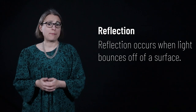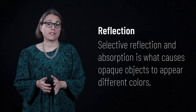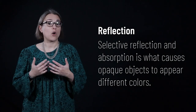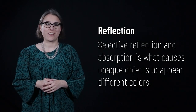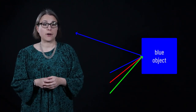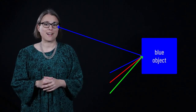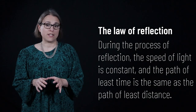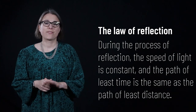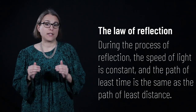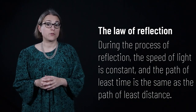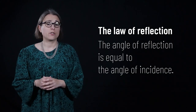Reflection is what happens when light bounces off of a surface. As we learned in lecture 27, selective reflection and absorption of different colors of light is what makes opaque objects look a certain color. When white light hits something blue, the blue light reflects back to our eyes and red and green light is absorbed. The law of reflection tells us exactly how each ray of light moves when it bounces off a surface. Due to the principle of least time, and because the speed of light stays constant, the path of least distance equals the path of least time.